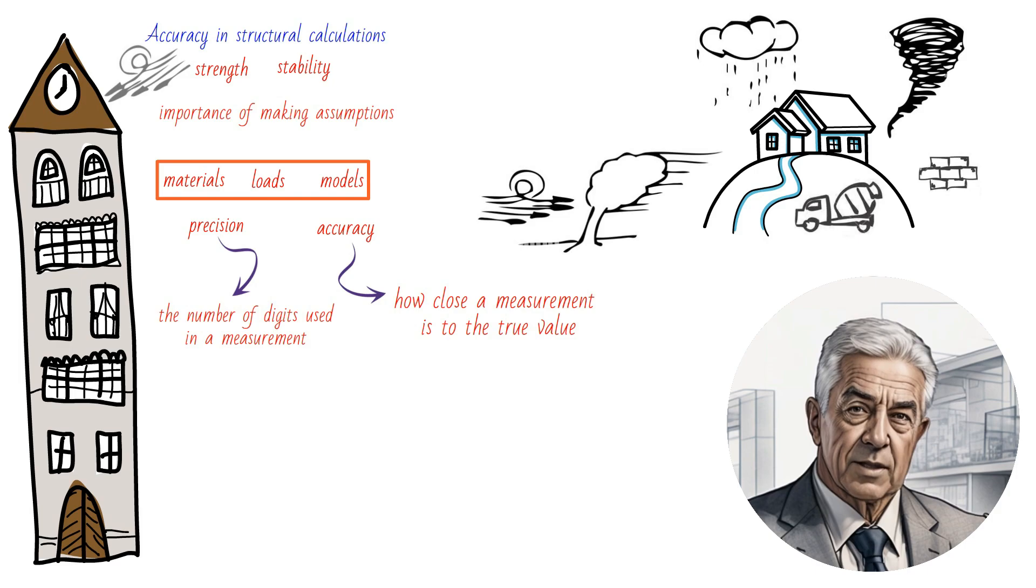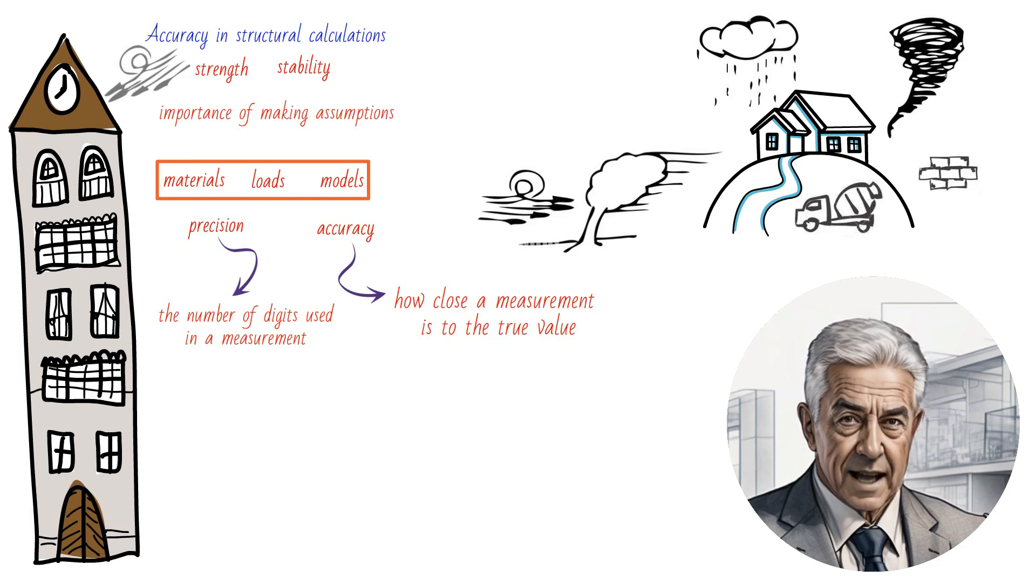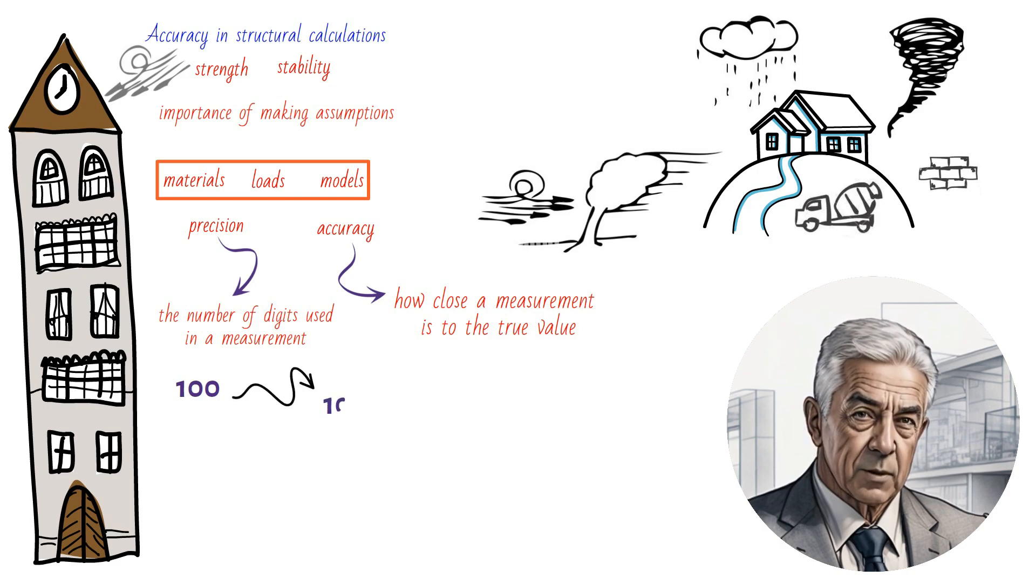A key concept in determining precision is significant figures. Significant figures are the digits in a number that are known with some level of certainty, plus one additional digit that is uncertain. For example, 100 has three significant figures, while 100.0 has four significant figures.